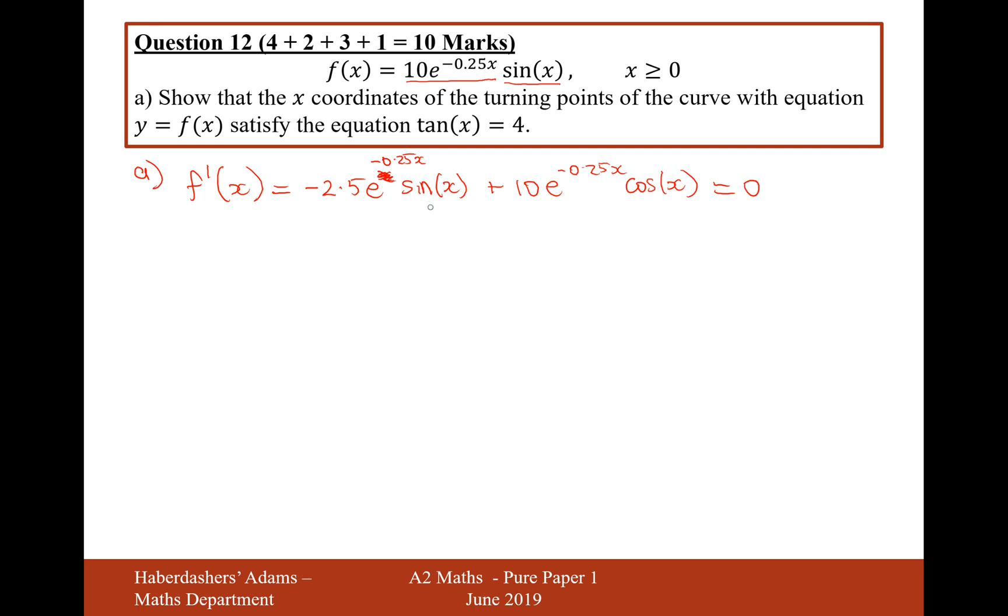Now, the first thing I'm going to do in this equation here is I know that e can never equal 0, so I'm going to just divide by e to the minus 0.25x, because that can never equal 0. That's always positive, so it's not going to help me find an equation that equals 0.